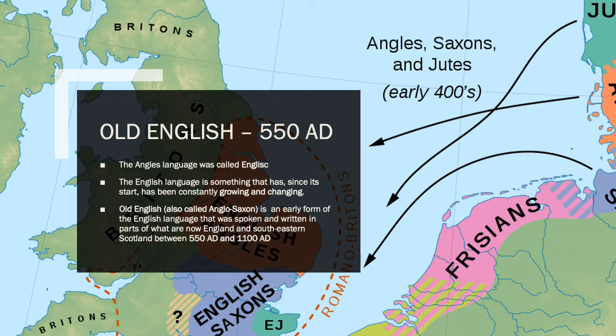The English language has, since its very beginning, been constantly growing and changing. We know already that the language spoken in the country we now call England changed due to invasions, and it continued to grow and change during the years following those invasions, when people settled. Old English, which is also called Anglo-Saxon, is an early form of the English language that was spoken and written in parts of what are now England and Southeastern Scotland between 550 AD and 1100 AD.